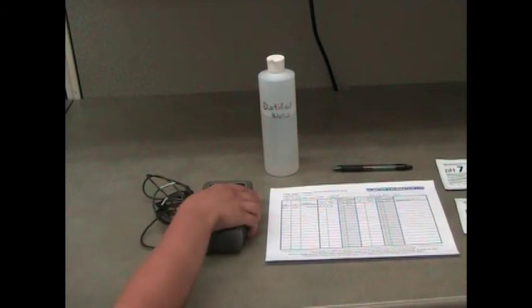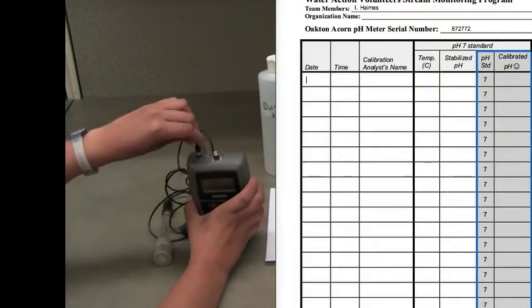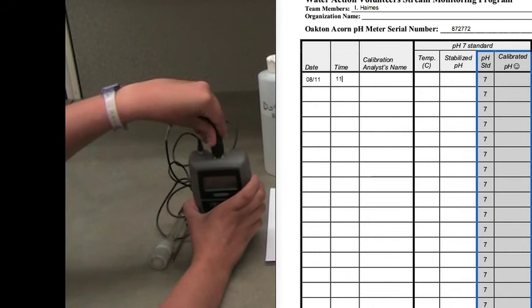Connect the pH and temperature probes to the meter and turn the meter on. Press the MODE button to enter pH mode if necessary.